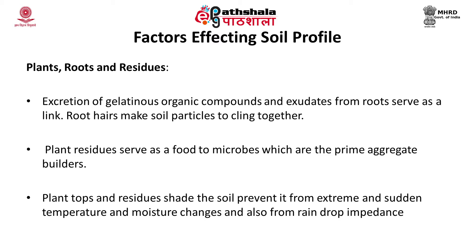Plant roots and residues are also factors affecting the soil profile. Excretion of gelatinous organic compounds from roots serves as a link. Root hairs make soil materials cling together. Grass and cereal roots and pressure exerted by roots also hold particles together. Dehydration of the soil strains it due to shrinkage, resulting in cracks that lead to aggregation. Plant top residue shades the soil, preventing extreme and sudden temperature and moisture changes and rain drop impact. Plant residue also serves as food for microbes, which are the prime aggregate builders.